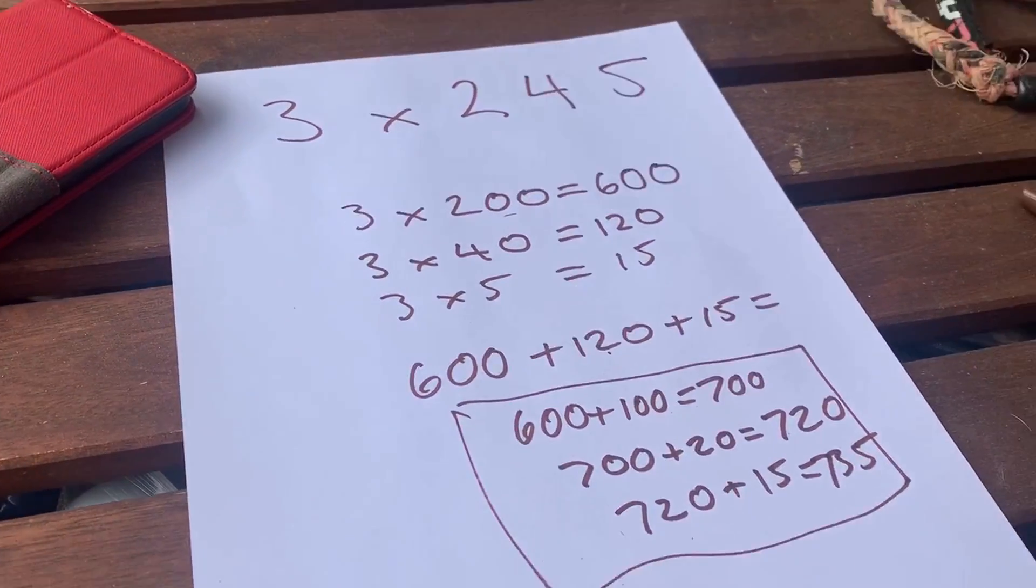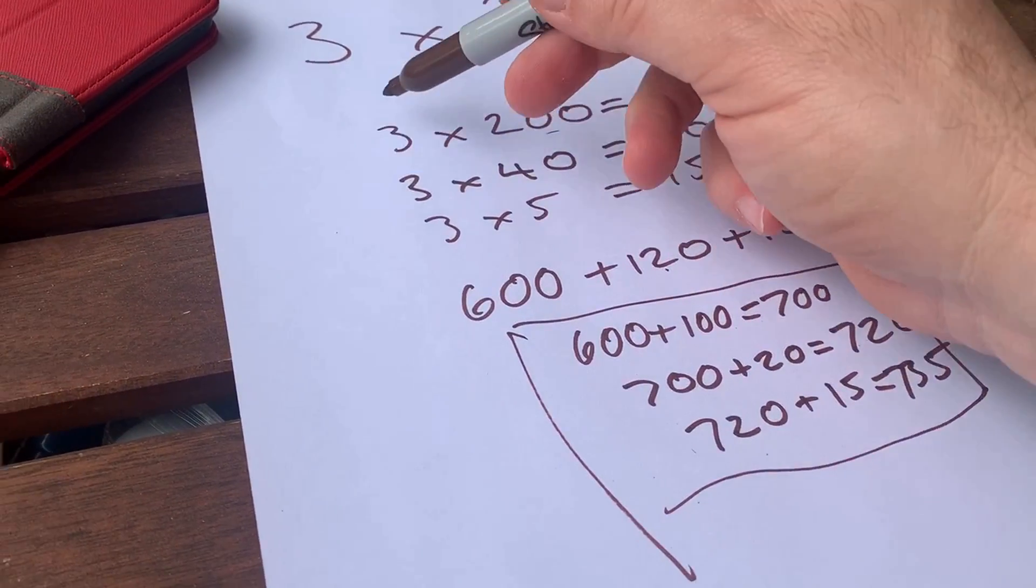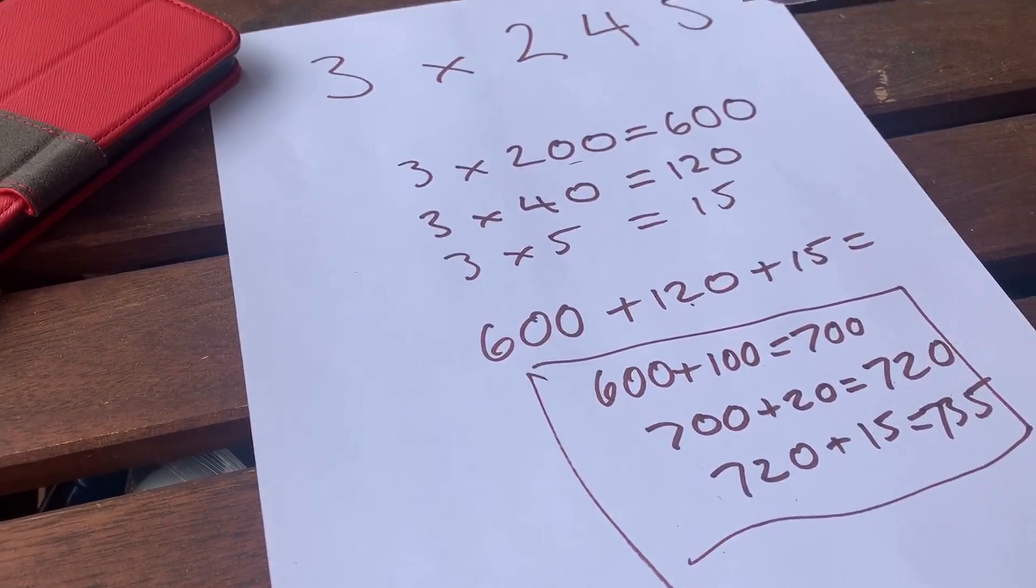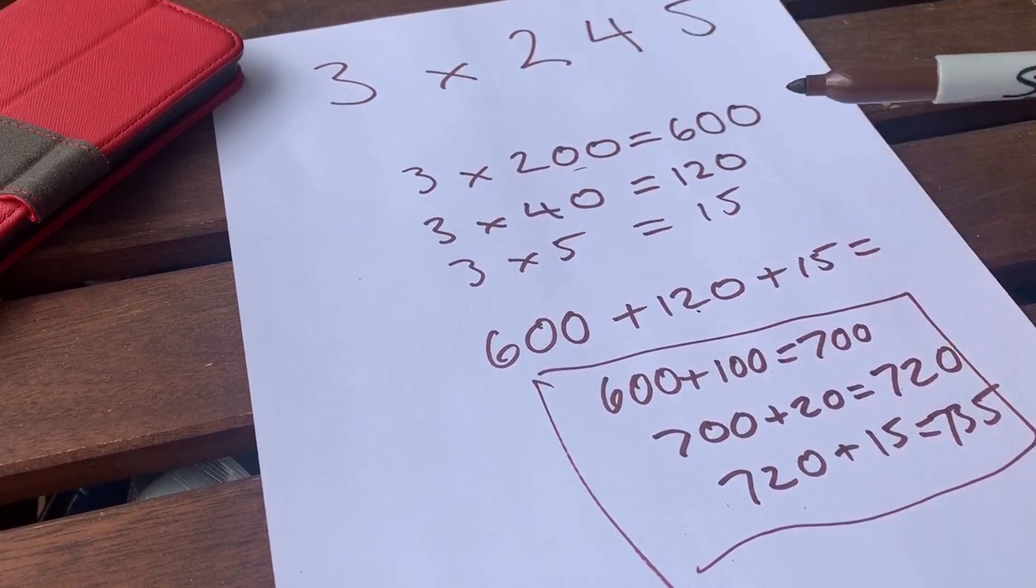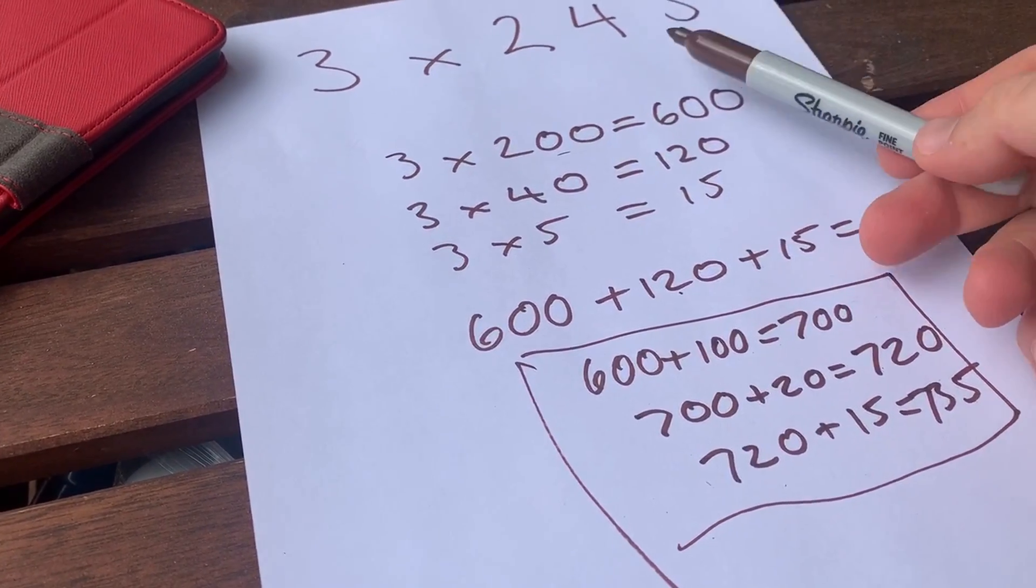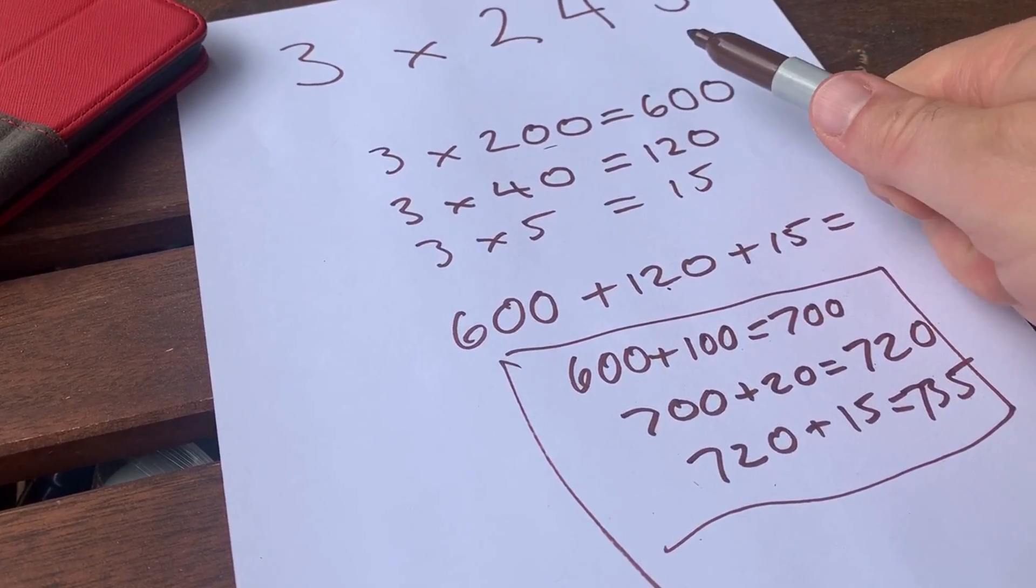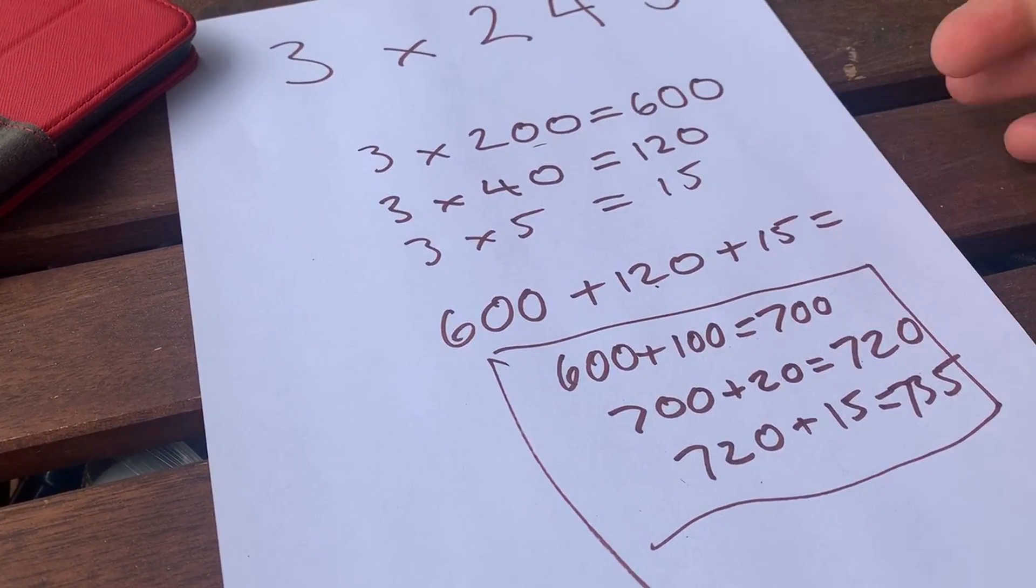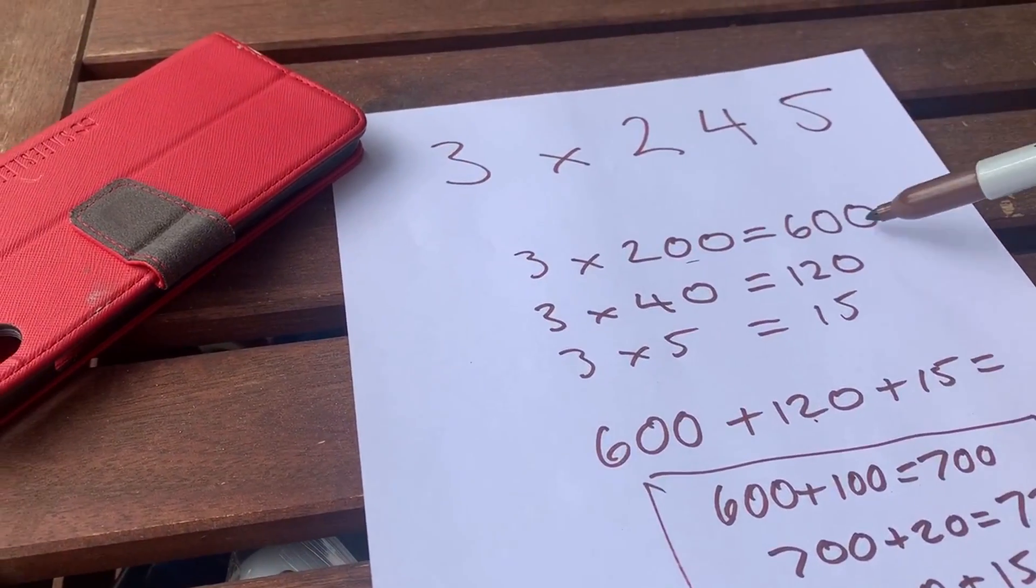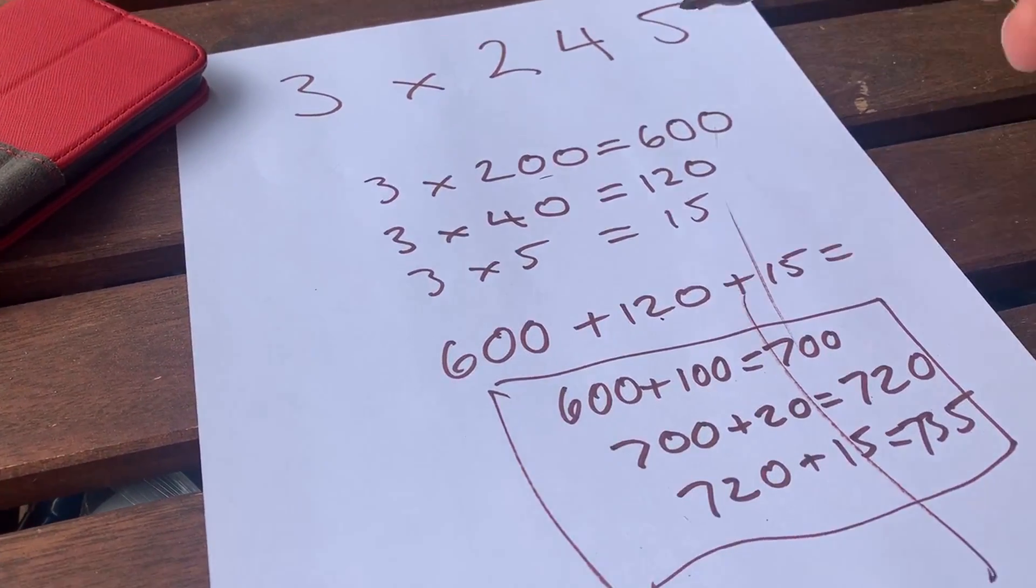Again, if you're very strong with your times tables, you may not need to write anything. You might just be looking at the camera and explaining: three times 200 is 600, three times 40 is 120, 3 times 5 is 15, so 600 plus 120 plus 15 equals 735. If you're really great at math and you don't need to make a single note like this, awesome, do it that way.